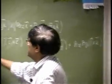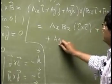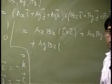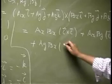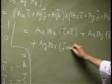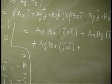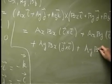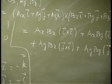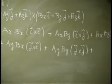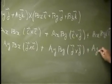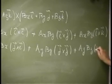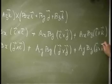Then you have the second one, which will be Ay Bx, and that is going to be j cross i, plus Ay By j cross j, plus Ay Bz and I am going to have j cross k.